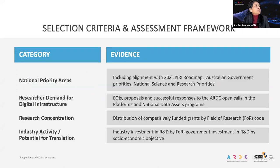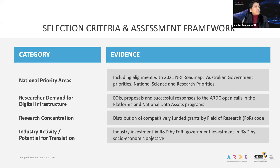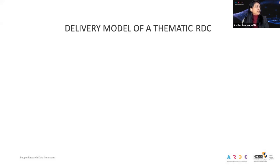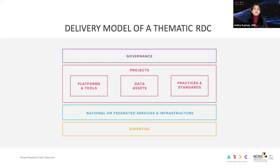Just touching briefly on the selection criteria for selecting the themes themselves — we looked for alignment between national priorities, research concentration, and industry activity to maximize impact. In addition, we considered the demand for digital research infrastructure and areas of synergy with other research infrastructure providers. Based on this, we have the two themes of people and planet. Conceptually, the key components of the delivery model for the thematic RDC are four layers. Starting with personnel and expertise, which represents the deep knowledge base within the ARDC team related to data, the research data lifecycle, and digital research infrastructure.